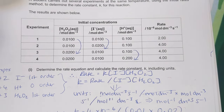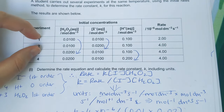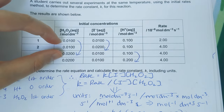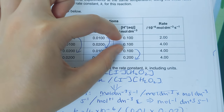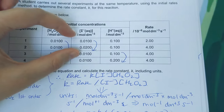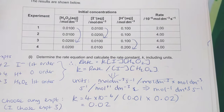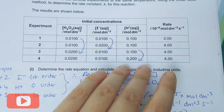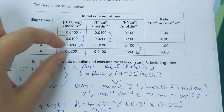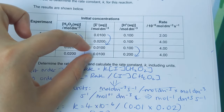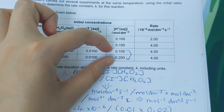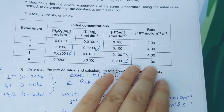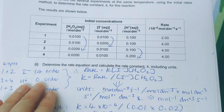Then we do the same for iodide ions — comparing experiments one and two, where hydrogen peroxide stays constant at 0.01 and H⁺ stays constant at 0.1. The concentration of iodide doubles and the rate doubles, so it's also first order with respect to iodide. For H⁺ ions, comparing experiments three and four: concentrations of hydrogen peroxide and iodide are constant, H⁺ doubles but the rate remains constant. So changing concentration of H⁺ has no effect — it's zero order with respect to H⁺.